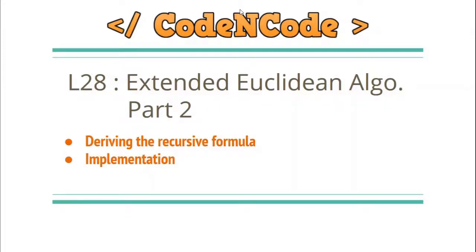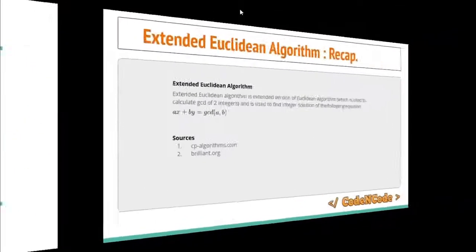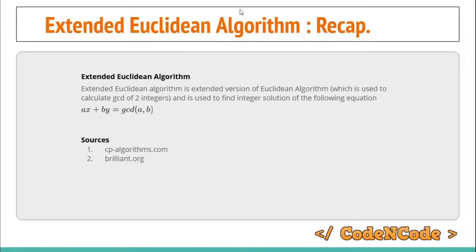Hello guys, this is Code and Code, and this is the 28th lecture of the Number Theory series. In the previous lecture we were introduced to the Extended Euclidean Algorithm, and this is Part 2 of that algorithm. In this lecture we are going to derive the recursive formula and implement it.